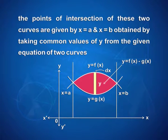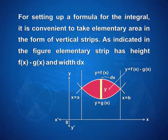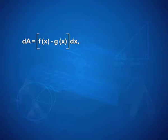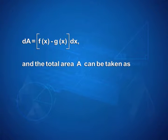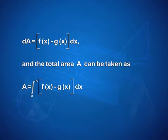The points of intersection of the two curves are given by x = a and x = b, obtained by taking common values of y from the equations of the two curves. For setting up a formula for the integral, it is convenient to take the elementary area in the form of vertical strips. The elementary strip has height f(x) − g(x) and width dx, so the elementary area dA = [f(x) − g(x)] dx, and the total area A = ∫ from a to b of [f(x) − g(x)] dx.